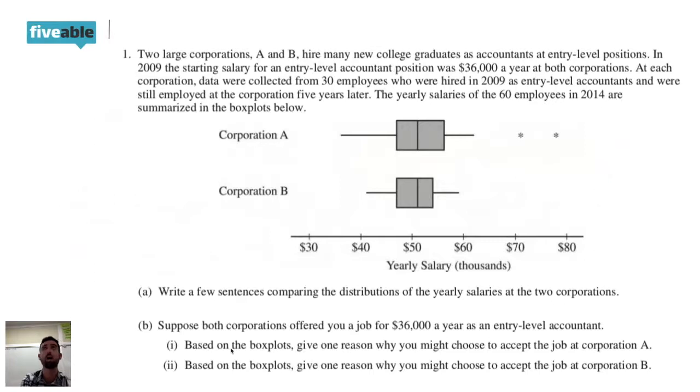So one reason why you might choose Corporation A is because you have an opportunity to make close to $80,000, right? So the maximum of Corporation A is a lot higher than the maximum of Corporation B. That's one reason grounded in statistics why Corporation A would be better than Corporation B. Now, you also might, or part B of question B asks, give one reason why you would accept Corporation B.